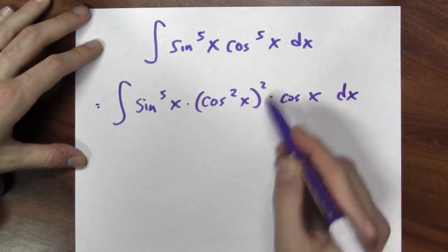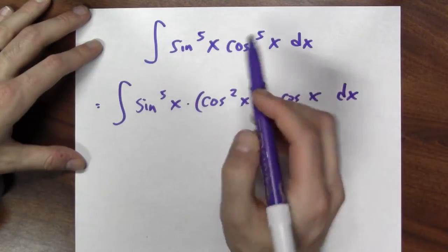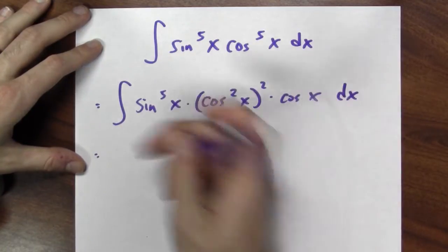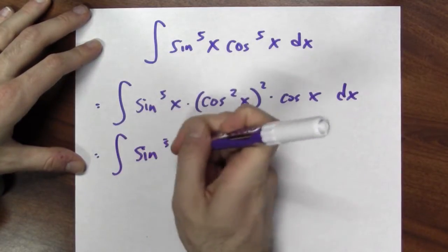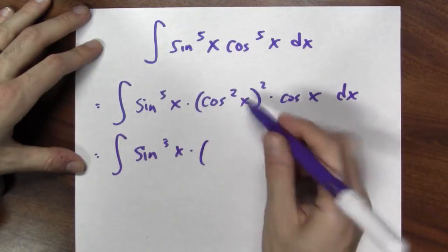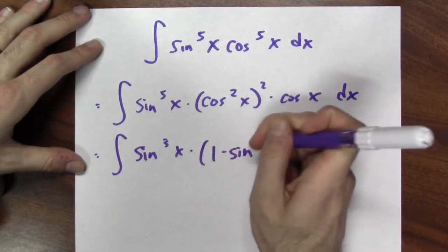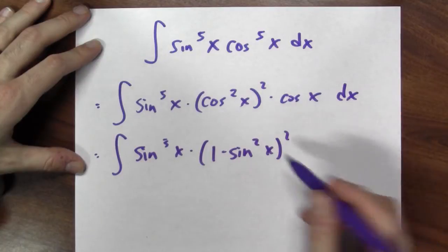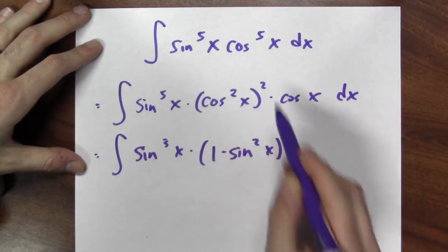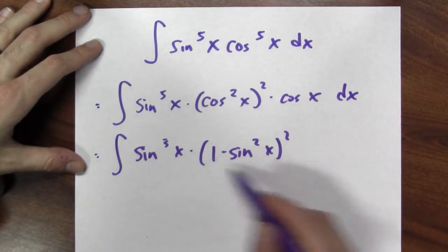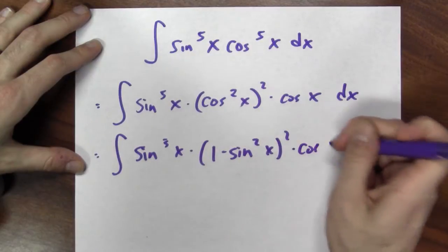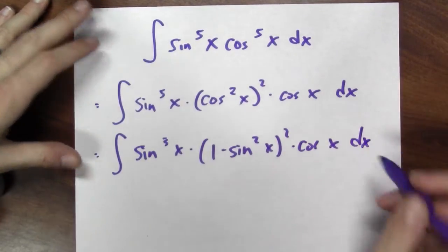This is 4 cosines times another cosine gives me cosine to the 5th. But now I can use the fact that cosine squared is 1 minus sine squared. So I can rewrite cosine squared squared as 1 minus sine squared squared, and then times cosine dx.